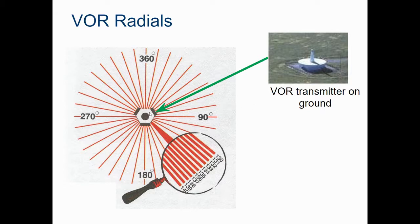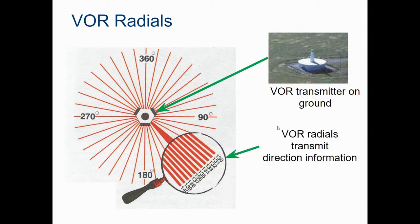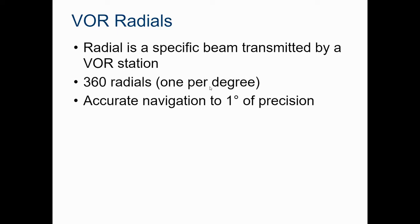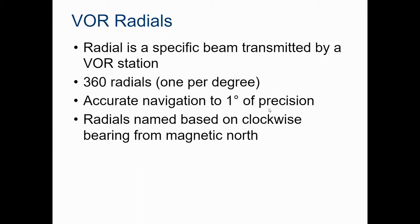VOR stations are represented by these little hexagon symbols on charts - sometimes with a little branch sticking off if it's a specific type. They're based off transmitters on the ground, so to have a VOR transmission you need a ground station, which makes it fairly expensive. VOR radials transmit directional information - each degree is a specific beam transmitted by the station, 360 radials at one per degree, accurate to one degree of precision.